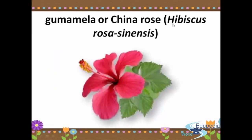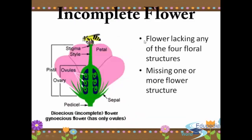The gumamela or China rose also has the scientific name Hibiscus rosa-sinensis. Next, we have the incomplete flower. This flower lacks any of the four floral structures, missing one or more flower structures. As you can see in the image, this is the incomplete flower.